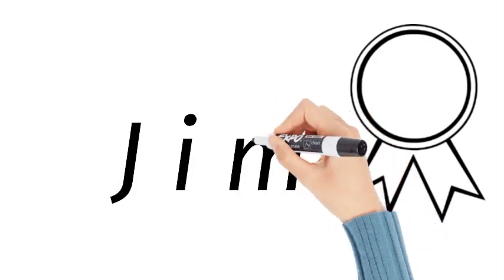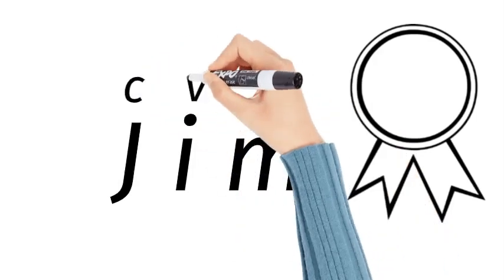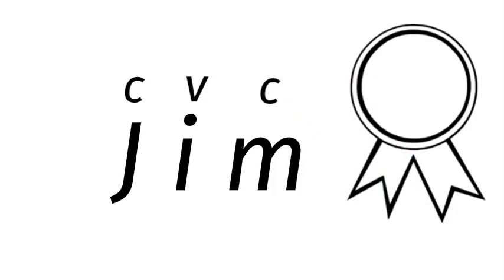How do we spell Jim? J-I-M. The J is a consonant, the I is a vowel, and the M is a consonant, so it's a CVC word.